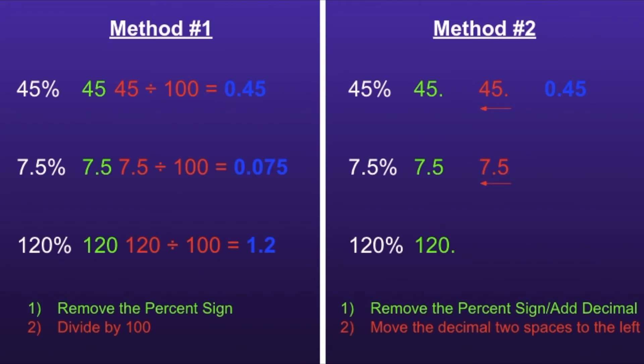When we move the decimal point two spaces to the left on the second problem, we are left with 0.075. And when we move the decimal point two spaces to the left on the last problem, we are left with 1.2.